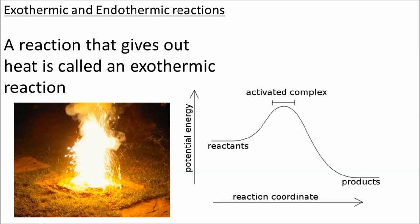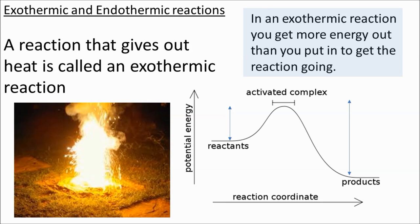Exo means outside, so it gives off heat, gives heat to the outside. Endo means inside, takes heat in or takes energy in. So an exothermic reaction is one that gives out heat, and it does this because the amount of energy that you need to give this reaction to get it going is less than the amount of energy that you get from the overall reaction. So overall, you get energy out. In an exothermic reaction, you get more energy out than you put in.